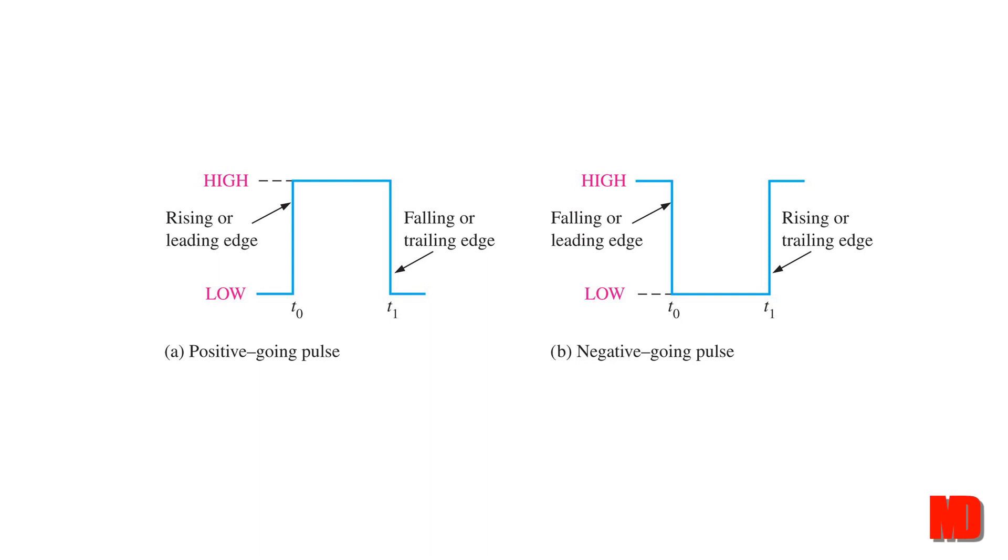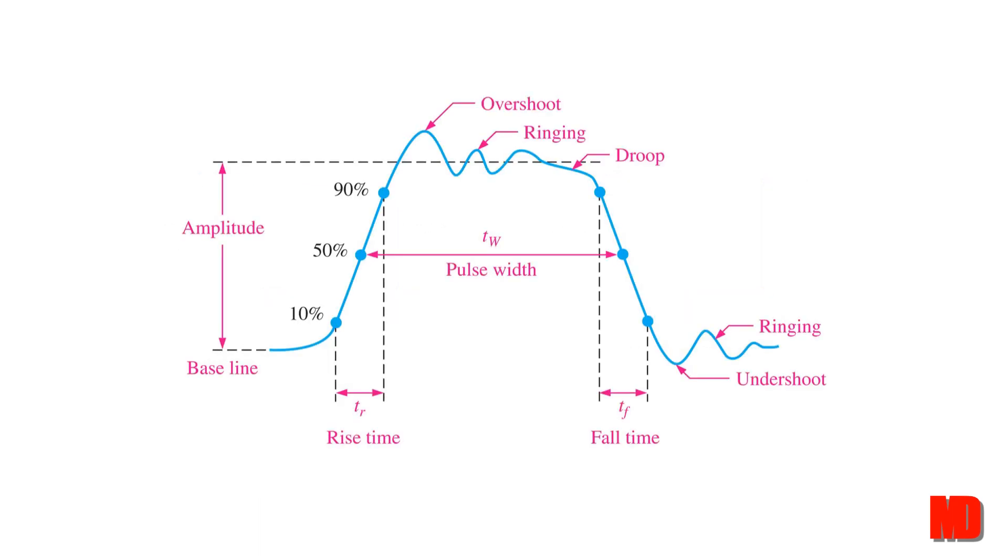Realistically, the signals being passed are not these well-formed square waves. A non-ideal pulse is shown here. So most pulses have some or even all of these characteristics. The overshoot and ringing are from stray inductive and capacitive effects.